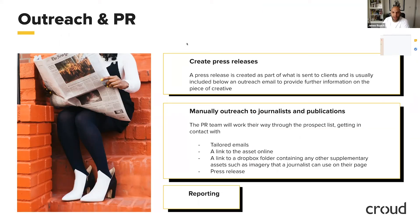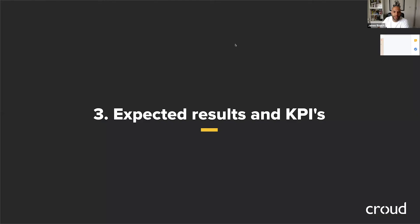Our PR team also creates press releases covering all the main headlines and stories from the asset, and then they manually outreach journalists and publications using tailored emails depending on the journalist, what they've written for, and what kind of publication they work for. In those emails we include a link to the asset we're pushing, as well as a link to a Dropbox folder containing the press release and any supplementary assets such as imagery that journalists may want to embed. We use a Dropbox link to avoid emails getting caught in spam filters and to keep email sizes manageable. The PR team is also responsible for reporting on the success and any links gained from the outreach process.